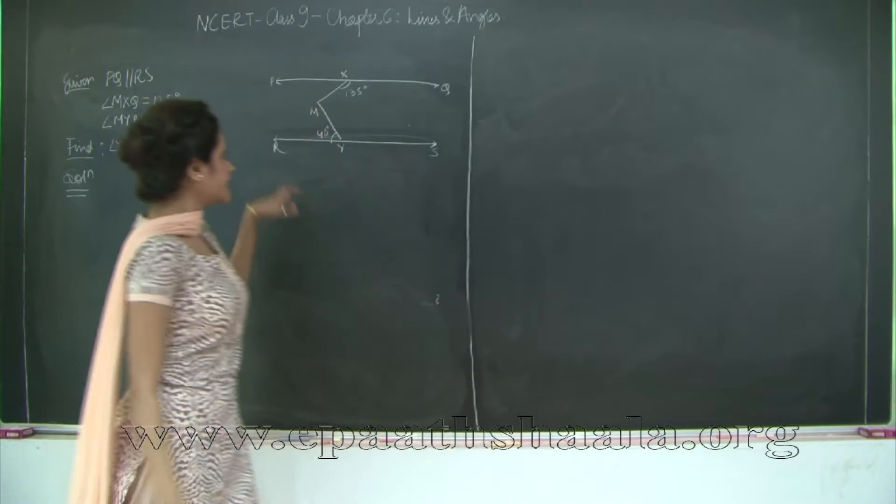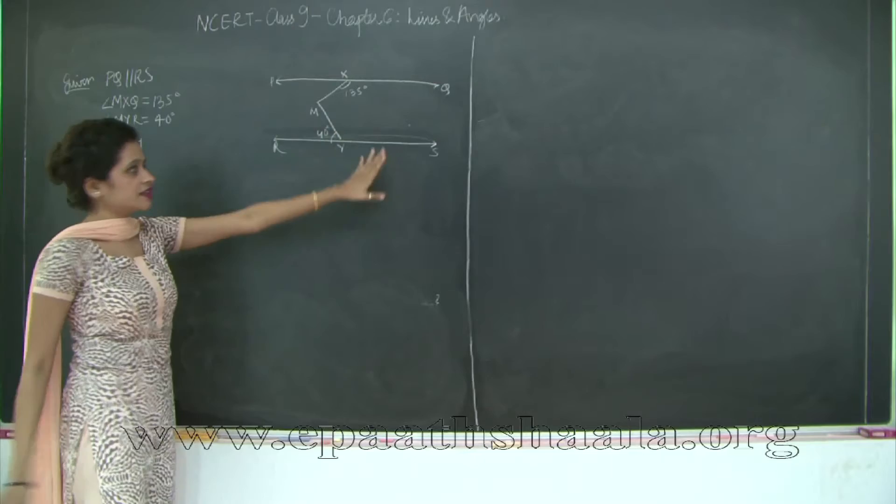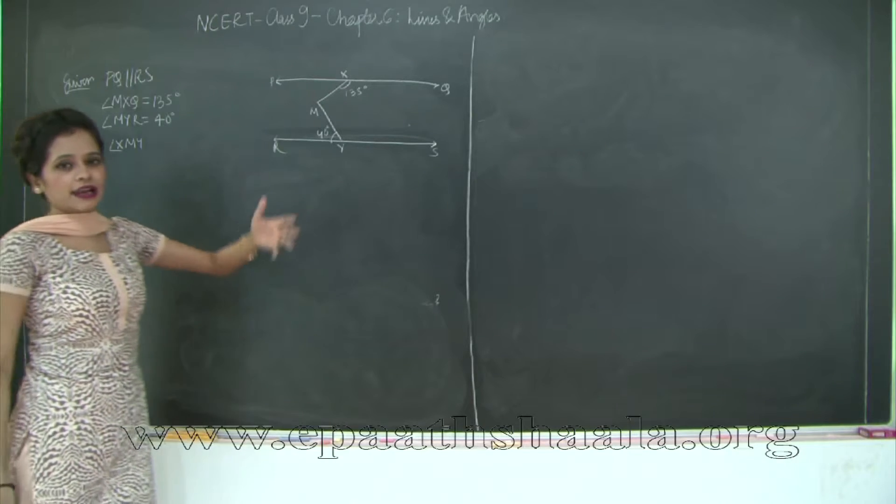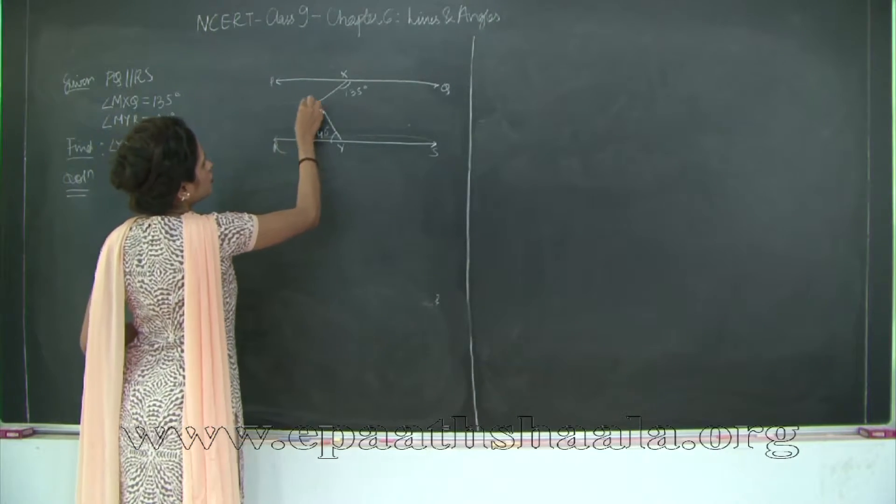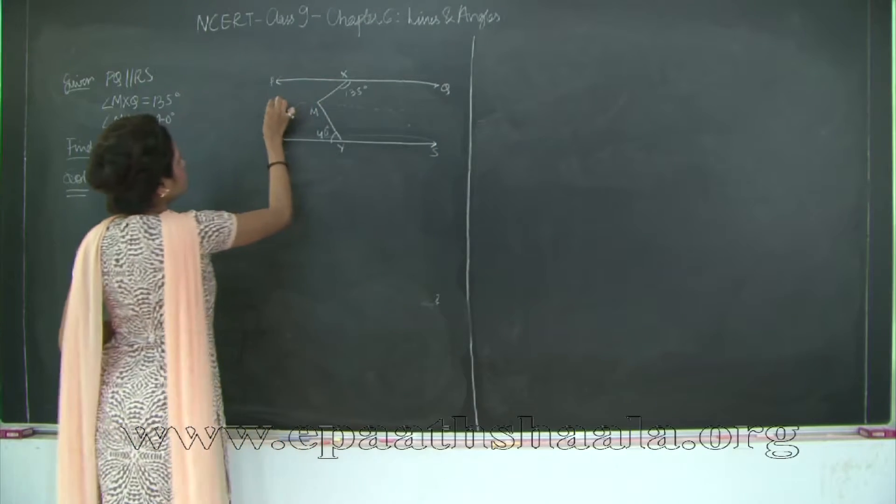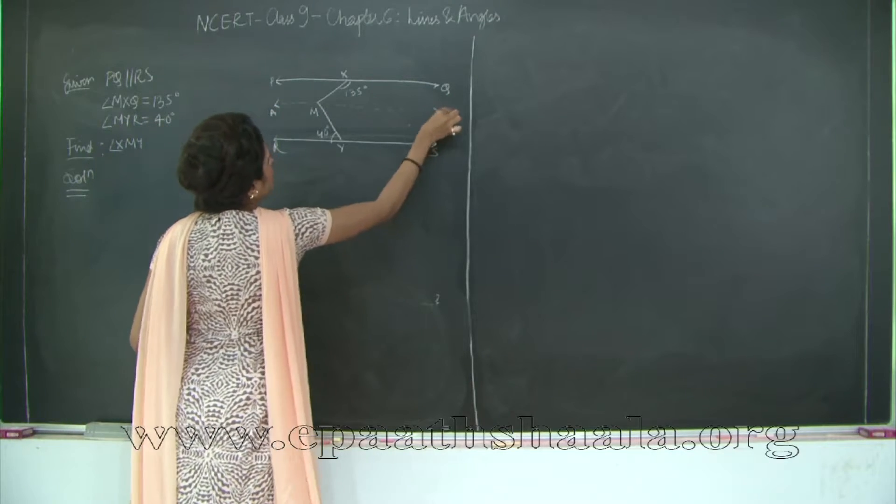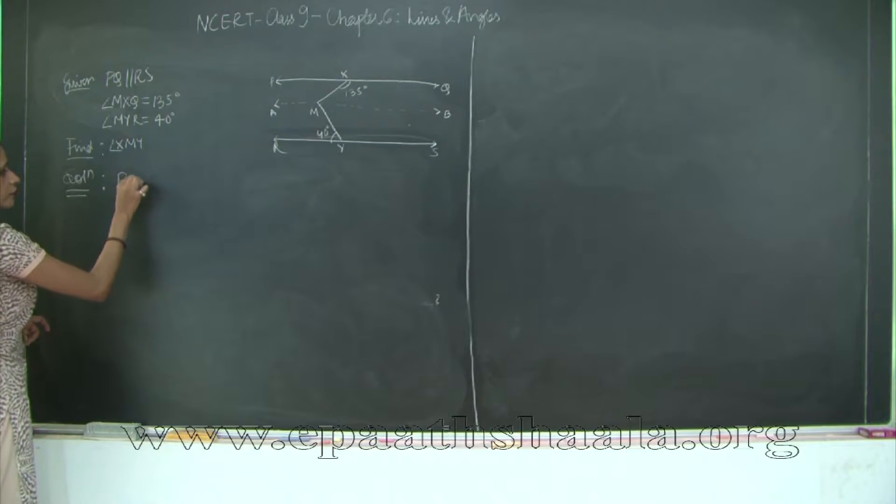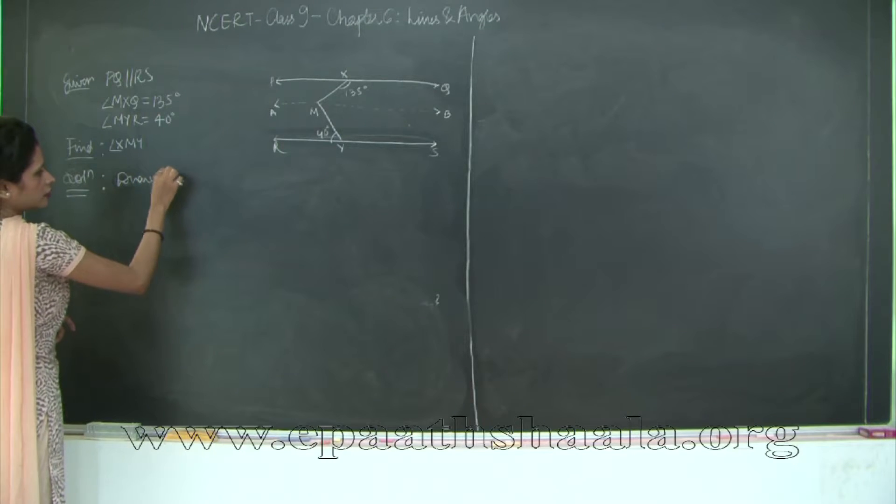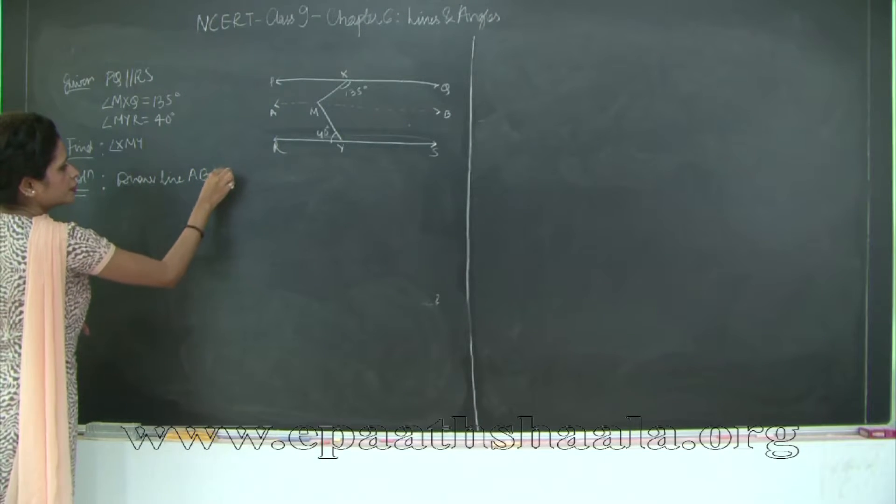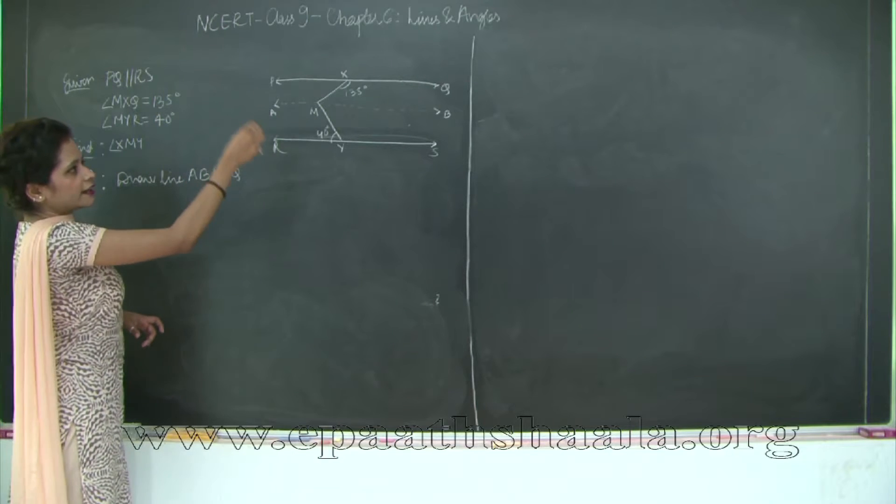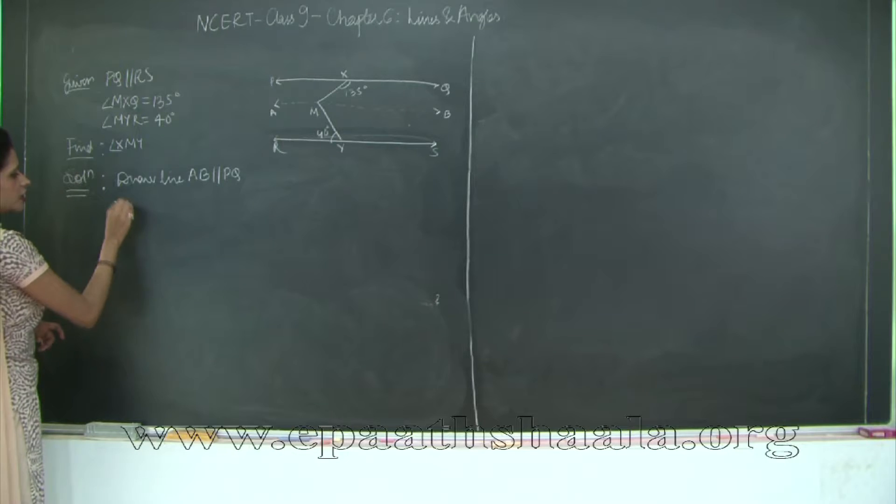We need to find angle XMY. Obviously, there isn't a method to directly find angle XMY. Since we are talking about parallel lines and transversal, let us draw a line AB parallel to PQ. So construction: let us draw line AB parallel to PQ. Therefore, from Theorem 6.6, line PQ is parallel to AB which is parallel to RS. Therefore, PQ is parallel to RS.